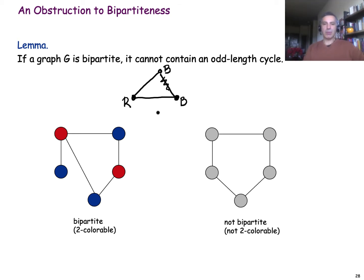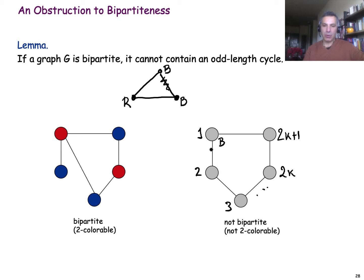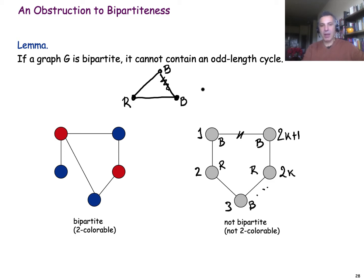More generally, suppose we have a cycle of odd length 2k+1, with nodes labeled 1 through 2k+1. If we start labeling nodes as blue for odd-indexed nodes and red for even-indexed nodes, we end up with a final edge connecting two blue nodes, even though we assumed the graph is bipartite. This is a contradiction, which proves that a bipartite graph cannot have an odd-length cycle.